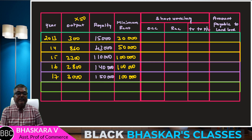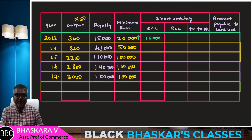The short workings: 19,000. Minimum rent 30,000 — first year record: 19,000. We'll discuss the next two years.